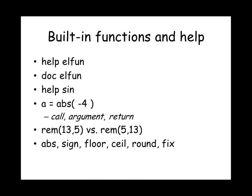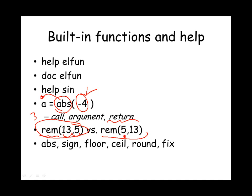When making use of a function, you are calling it with arguments provided in parentheses. For example, calling ABS with argument minus 4 returns the absolute value, which we store in variable A. Some functions take zero arguments, some take one or more. The order of arguments may change the result. Calling rem(13,5) finds the remainder of 13 divided by 5, giving 3. Whereas rem(5,13) finds the remainder of 5 divided by 13, giving 5.